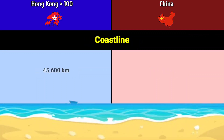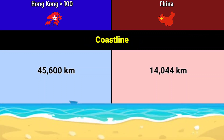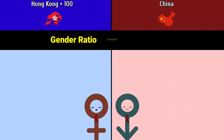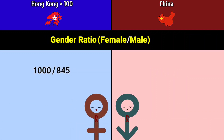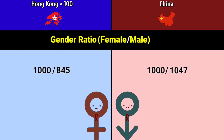Coastline: Hong Kong 45,600 kilometers, China 14,044 kilometers. Gender ratio female per male: Hong Kong 1,000 per 845, China 1,000 per 1,047.